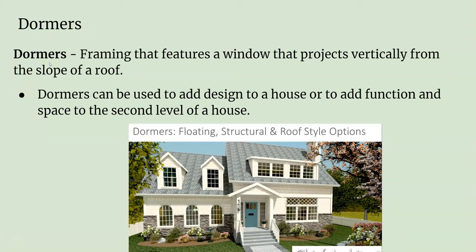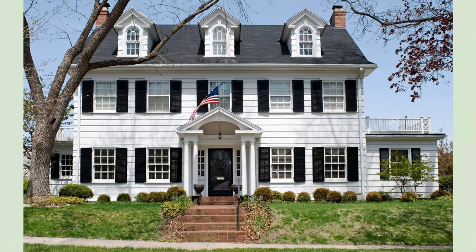Moving on are dormers. Dormers feature a window that projects vertically from the slope of a roof — like bump-outs off the slope that go up vertically and usually have a window. They can be decorative, as you see here, where you can tell by the slope of the roof that these are just decorations, not really for function. They're too small and too widely spaced to create any kind of third level — really just decorative.